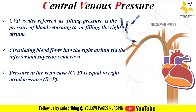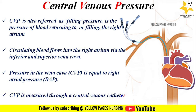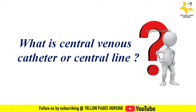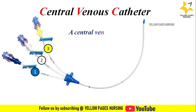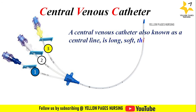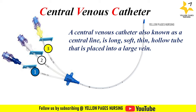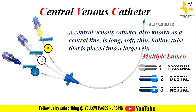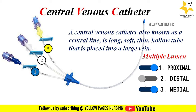CVP is measured through a central venous catheter in place. A central venous catheter, also known as a central line, is a long, soft, thin, hollow tube that is placed into a large vein, and the catheter tip sits just outside the right atrium in the superior vena cava. The central line has multiple lumens, namely proximal, distal, and medial, as shown in this picture.